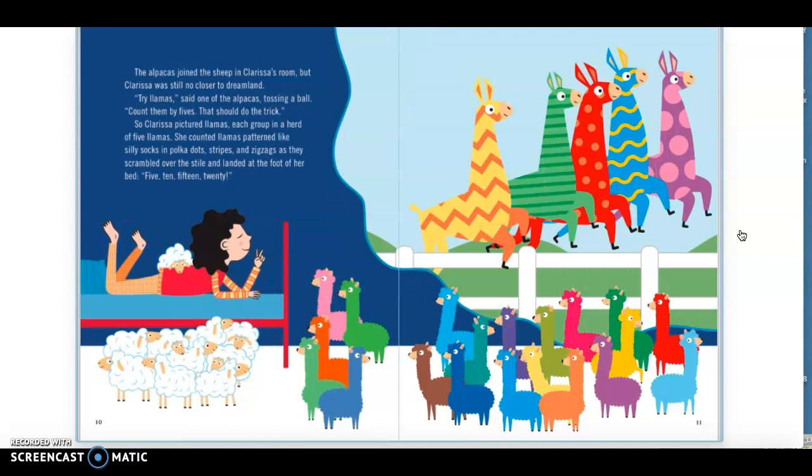The alpacas joined the sheep in Clarissa's room, but Clarissa was still no closer to dreamland. Try llamas, said one of the alpacas, tossing a ball. Count them by fives. That should do the trick. So Clarissa pictured llamas, each group in a herd of five llamas. She counted llamas patterned like silly socks and polka dots, stripes and zigzags as they scrambled over the stile and landed at the foot of her bed.